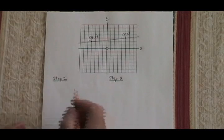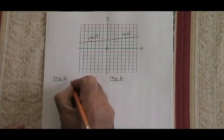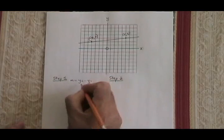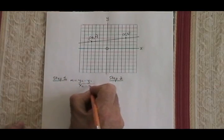Step 1 is find the slope. You use the slope formula, m equals y2 minus y1 over x2 minus x1.